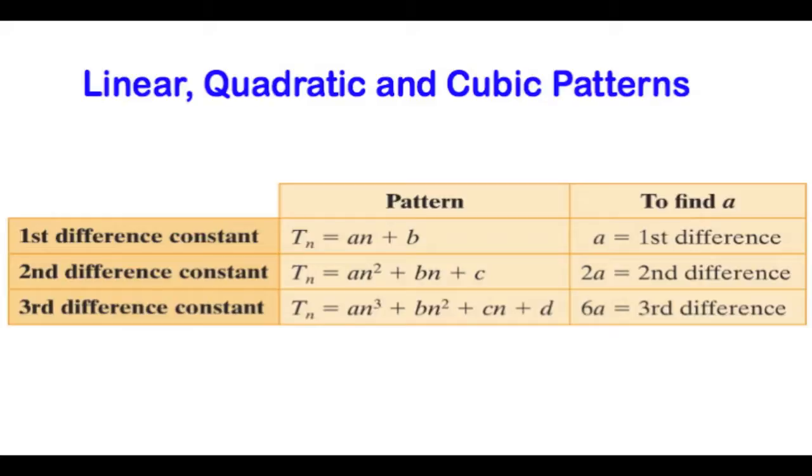The following table is very important and should be learned. If the first difference is constant in a pattern, the pattern is linear. If the second difference is constant, it is a quadratic pattern. And if the third difference is constant, then we have a cubic pattern.